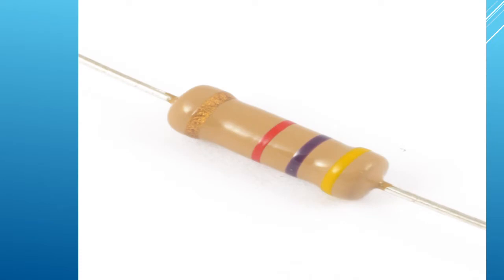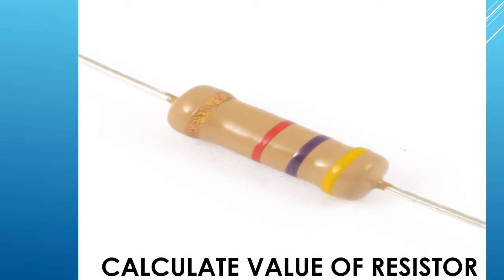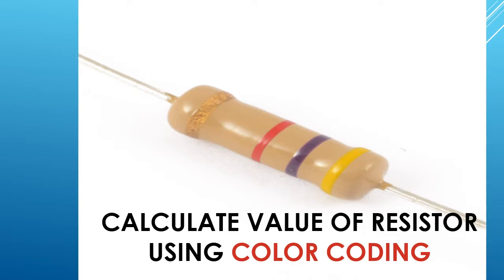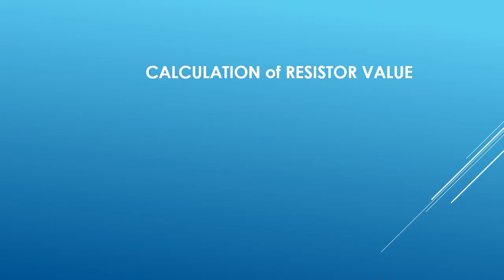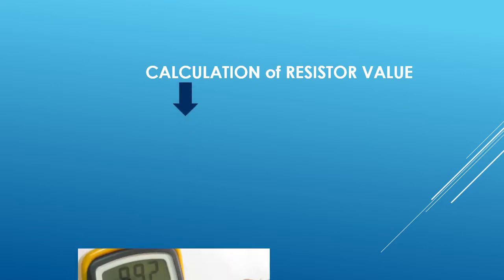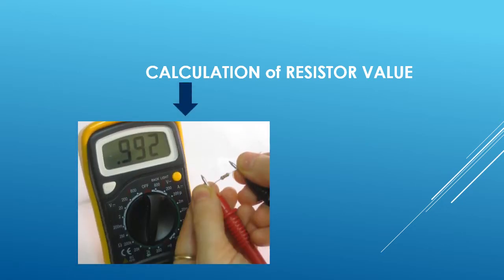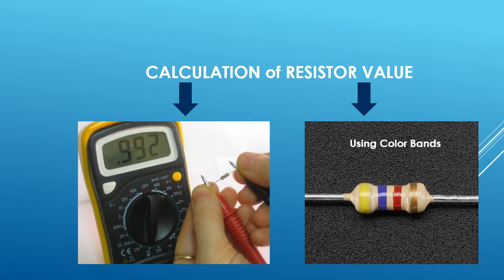Hello, I am Swati and in today's video we are going to see how to calculate the value of a resistor using color coding. There are two methods to calculate the resistor value. The first method is by using a multimeter, and the second method is by using color bands which are available on the resistor.